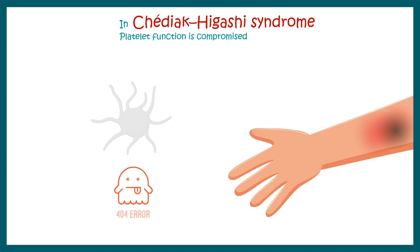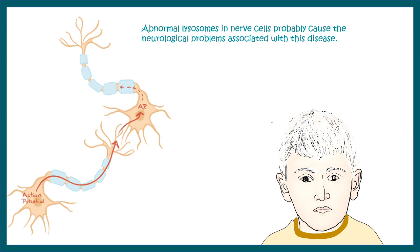In Chediak-Higashi syndrome, one important feature is frequent bruising on the skin and sometimes even bleeding, because platelets are also affected in this genetic situation where the LYST gene is mutated. This results in frequent bruising and sometimes severe bleeding.